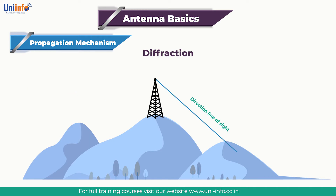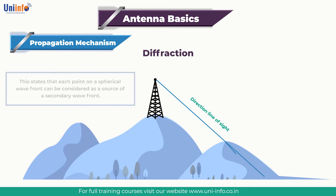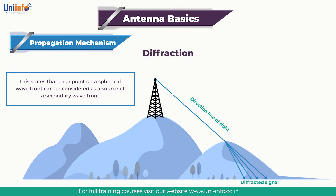To understand how this happens, it is necessary to look at Huygens' principle. This states that each point on a spherical wave front can be considered as a source of a secondary wave front. Even though there will be a shadow zone immediately behind the obstacle, the signal will diffract around the obstacle and start to fill the void.